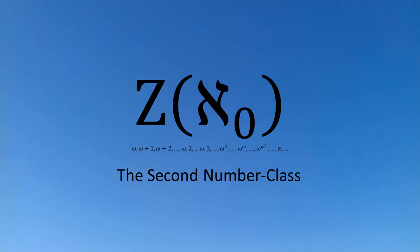Welcome to this video, the fifth video in my series of videos on Cantor's 1895 and 1897 articles on the theory of aggregates and transfinite numbers.